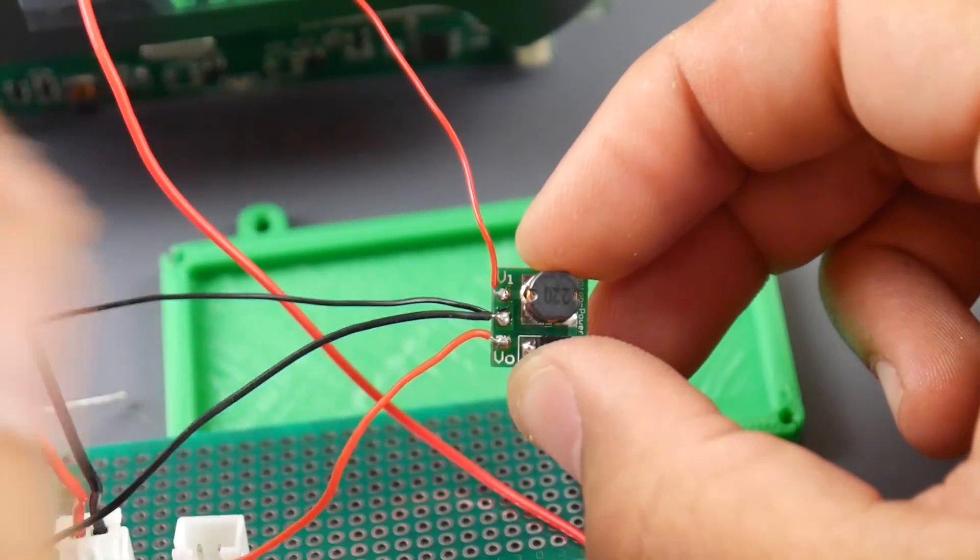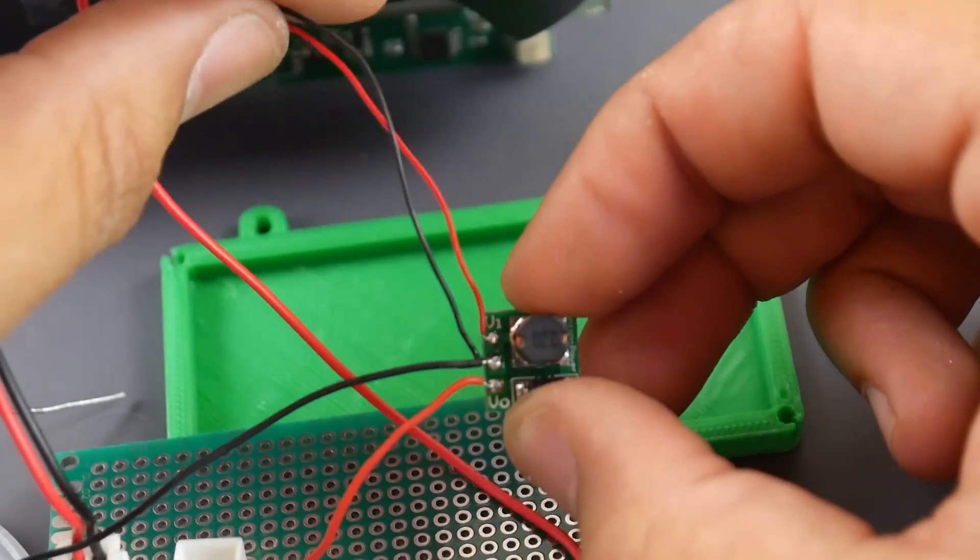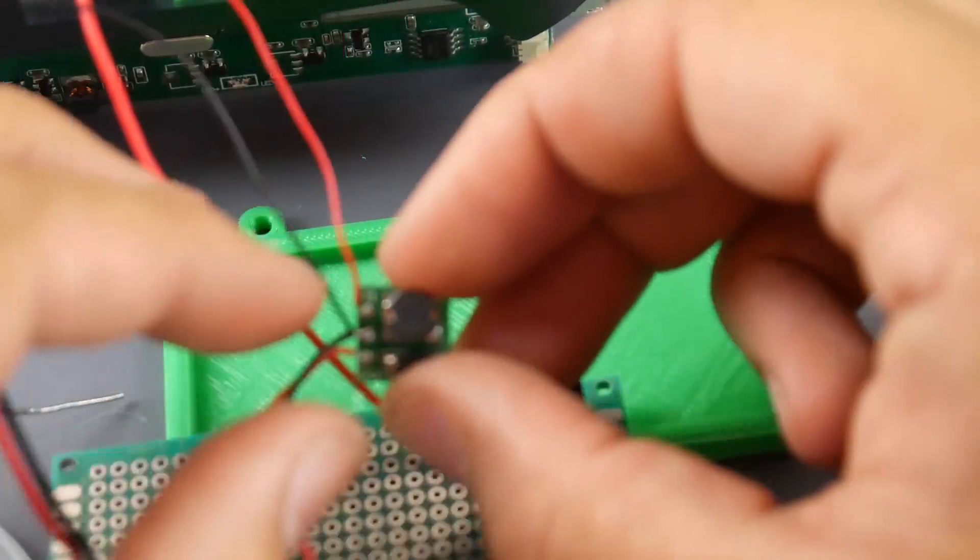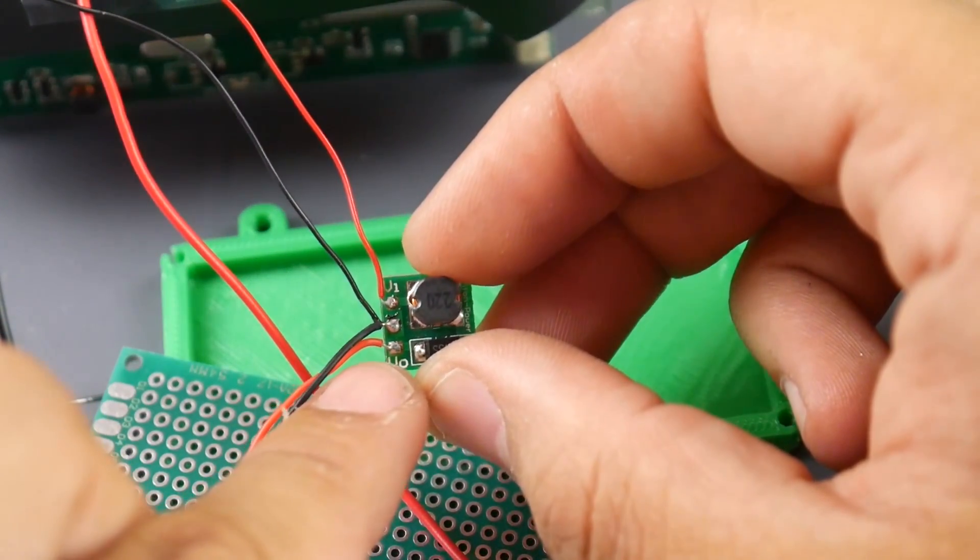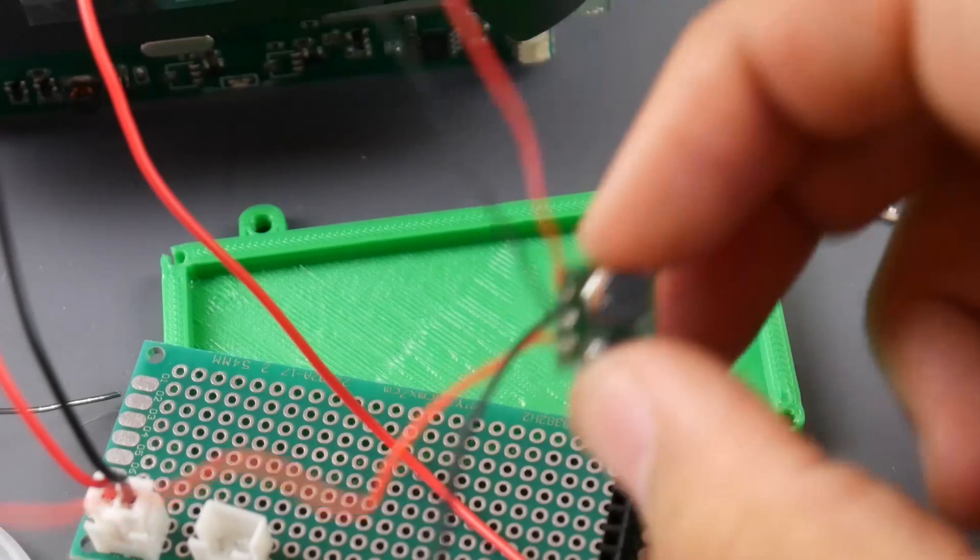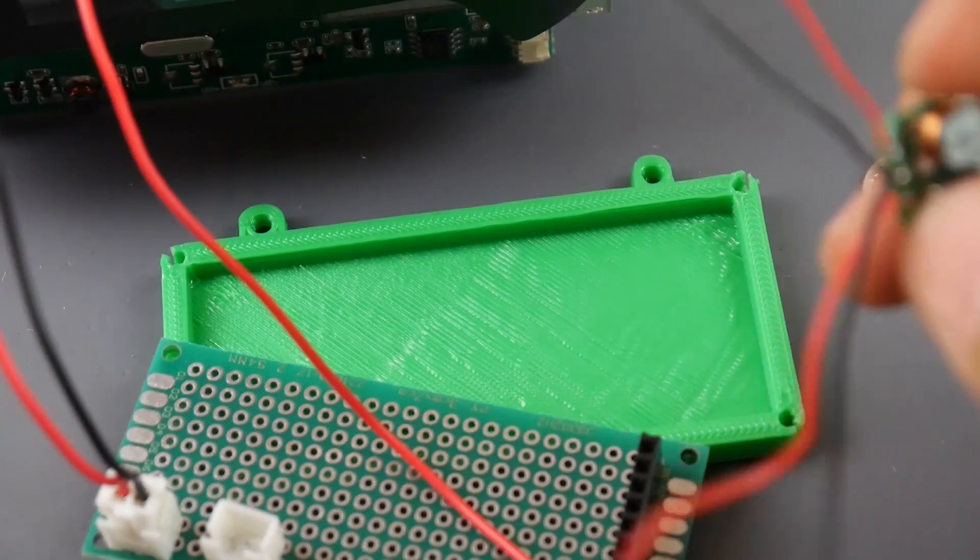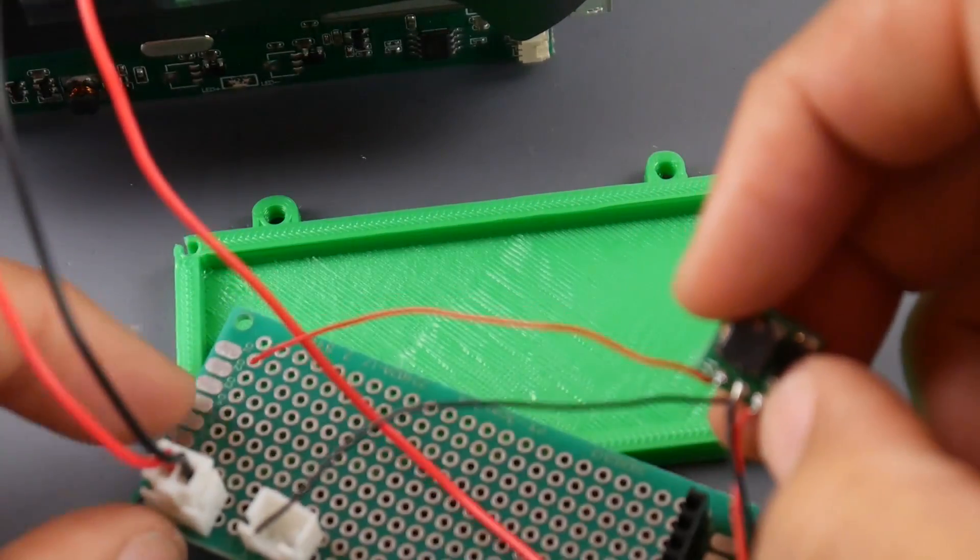VO is the voltage out, the red wire that's positive that's going to be going to the Fatshark module. VI is the input that's coming in, the red wire input that's coming in from the goggle. And the middle one is a common ground between them, so it's the ground for the in and the out as well.